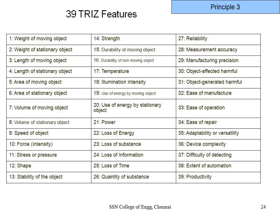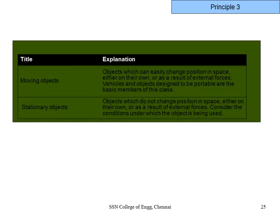These 39 engineering parameters include things like productivity increase, extent of automation, difficulty of detecting or measuring, weight of moving objects, and so on. For example, we are always worried about the weight of moving objects — for a car we want to improve fuel efficiency by reducing weight. Nanomaterials have many applications but quality control remains difficult. Any engineering problem falls within these 39 parameters.